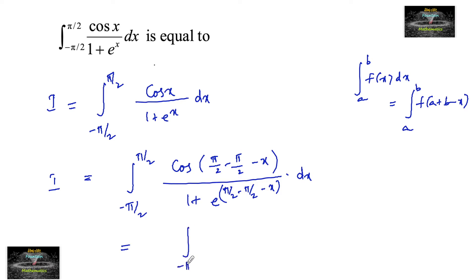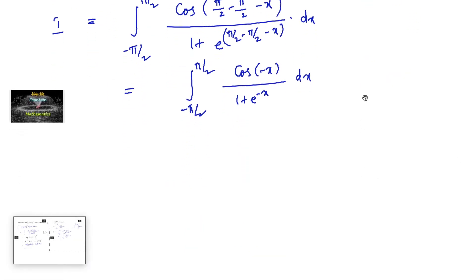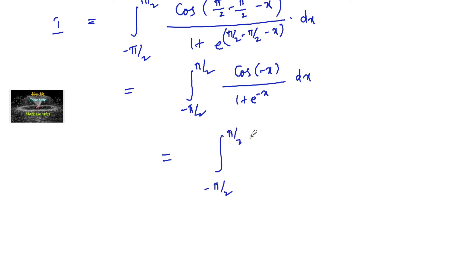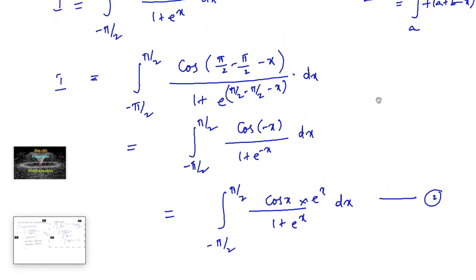This equals the integral from minus pi by 2 to plus pi by 2 of cos(minus x) divided by 1 plus e to the power of minus x dx. This simplifies to the integral from minus pi by 2 to plus pi by 2 of cos(x) times e to the power x divided by 1 plus e to the power x dx. We call this Equation 2, and the original is Equation 1.